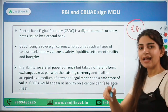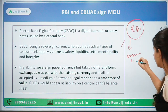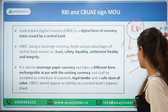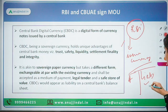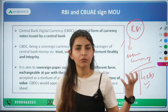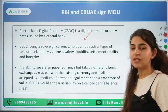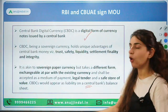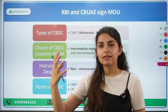One of the functions of RBI is the issuance of currency. The currency issued by RBI forms part of the liability of RBI in its balance sheet. Thus, because CBDC will work just like paper currency — as a currency issued by the central bank — it will also form part of the liability in the balance sheet of the central bank.